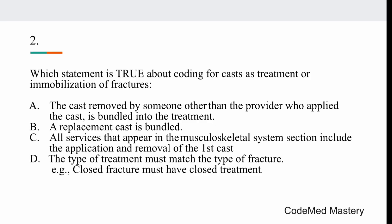The right answer is option C — all services that appear in the musculoskeletal system section include the application and removal of the first cast. In CPT coding for fractures, the initial cast or splint application is included in the fracture care code. This applies to closed treatment, open treatment, and percutaneous treatment. Always remember: the first cast or splint is included in the fracture care service.